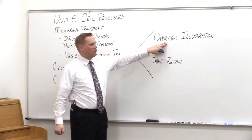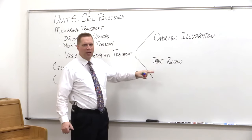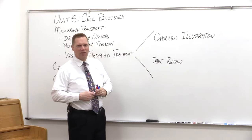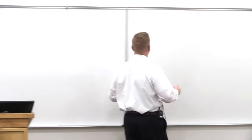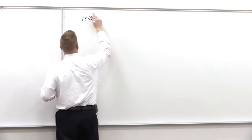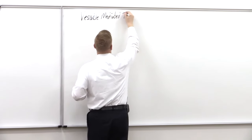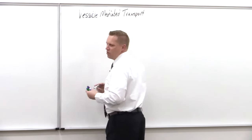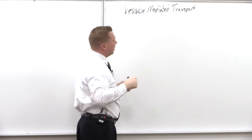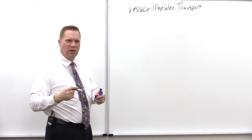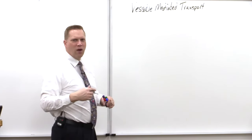What I'd like to do first is start out with an overview illustration of the processes of cellular transport, and then we'll do a review and look at it as a table to compare and contrast them. Vesicle-mediated transport is a way of getting things that are too large, like proteins or large macromolecules, into and out of the cell. They can't go through individual proteins like in protein-mediated transport, so we need vesicle trafficking to move them across the plasma membrane.